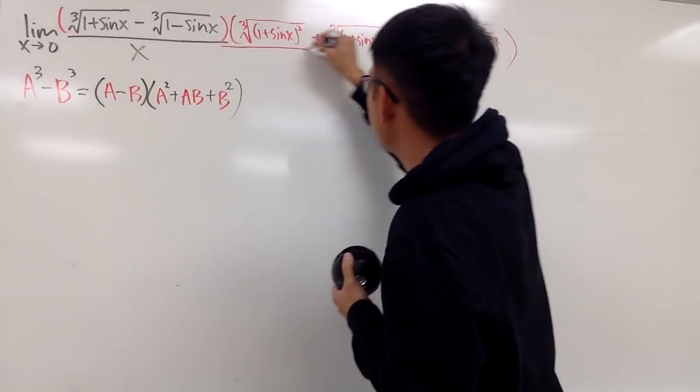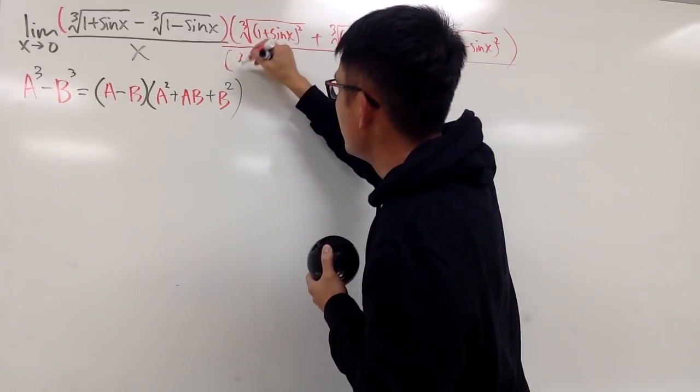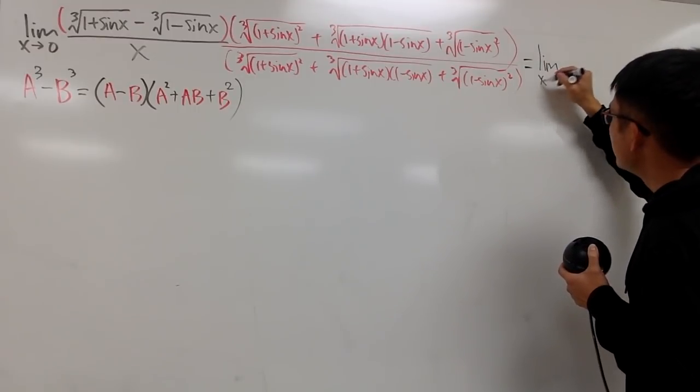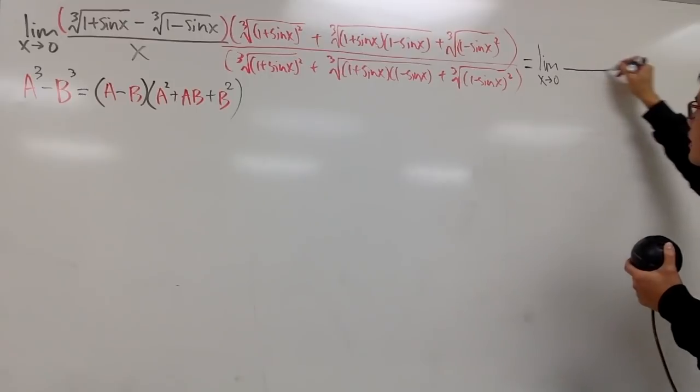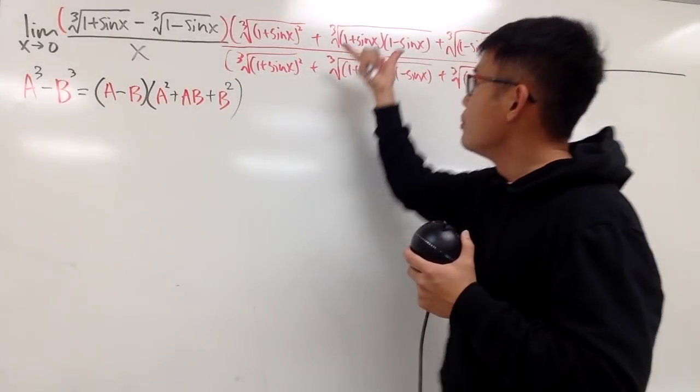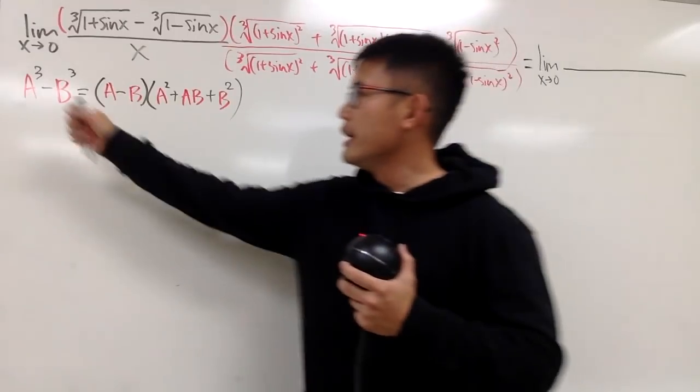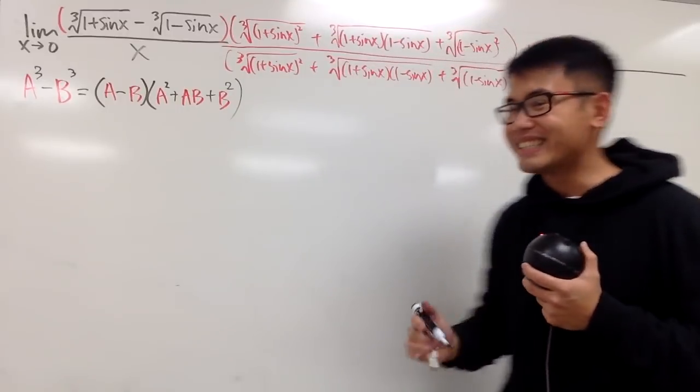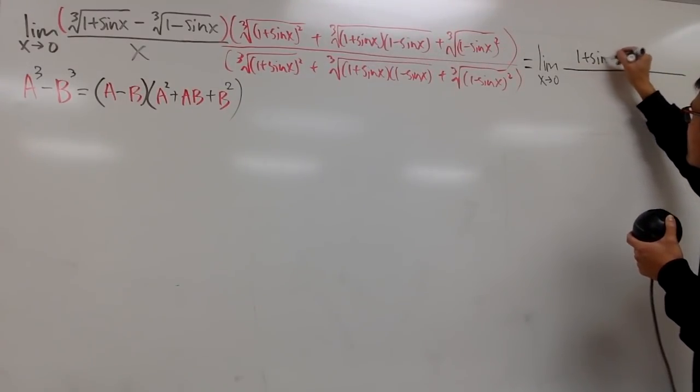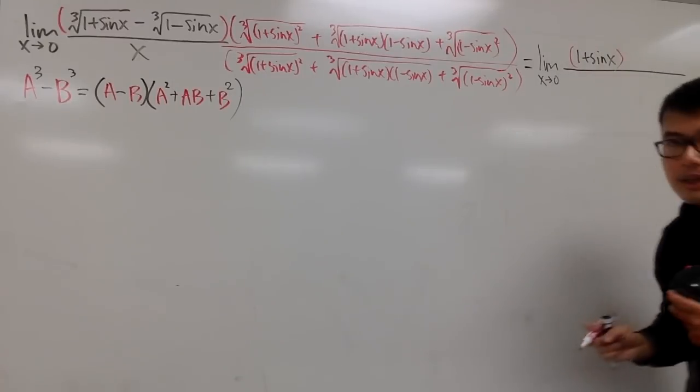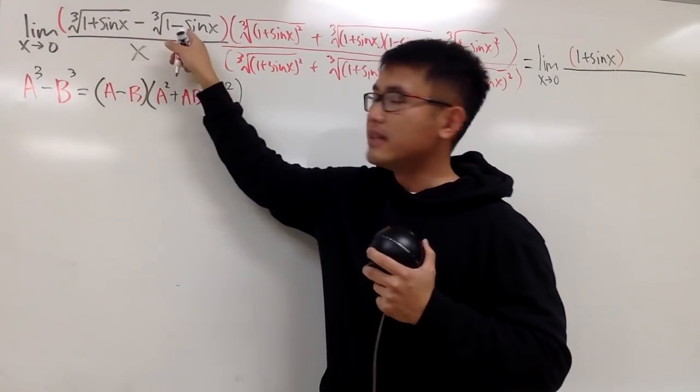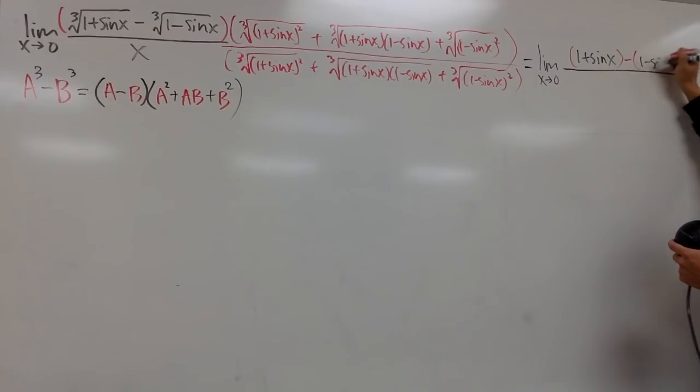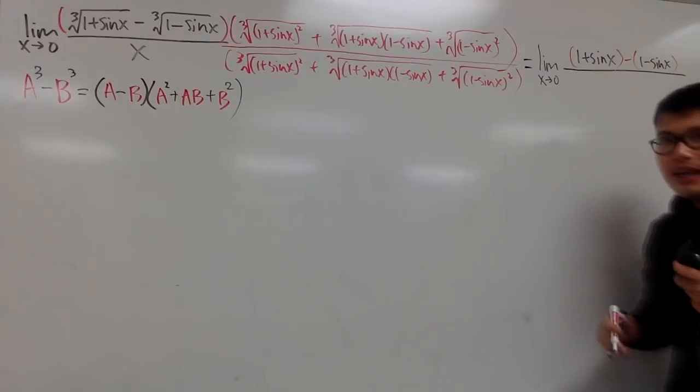That's pretty much the conjugate. And, of course, we will have to do the same thing on the bottom, so let's go ahead and do that. On the top, don't forget, you should write down the limit as x going to 0.